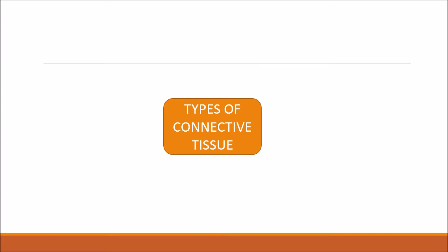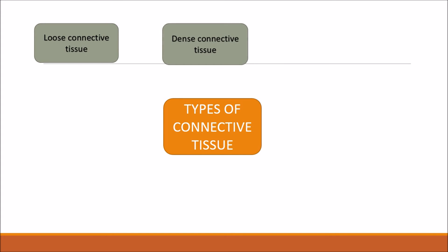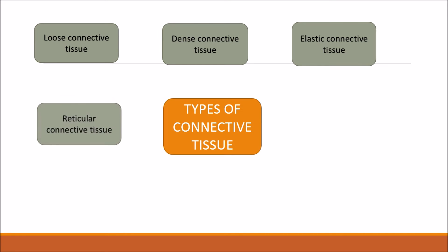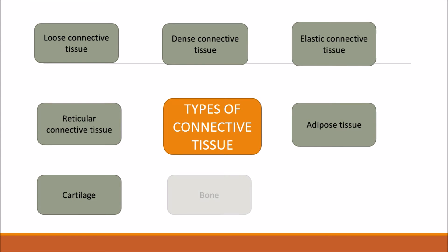Another quick test: what are the eight types of connective tissue you can find in the body? The answers are loose connective tissue, dense connective tissue, elastic connective tissue, reticular connective tissue, adipose tissue, cartilage, bone, and blood.